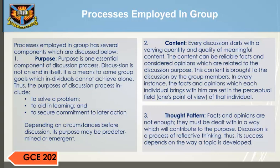2. Content. Every discussion starts with a varying quantity or quality of meaningful content. The content can be reliable facts and considered opinions which are related to the discussion purpose. This content is brought to the discussion by the group members. In every instance, the facts and opinions which each individual brings with him are set in the perceptual field — one's point of view — of that individual. 3. Thought Pattern. Facts and opinions are not enough; they must be dealt with in a way which contributes to the purpose. Discussion is a process of reflective thinking, and its success depends on the way a topic is developed.